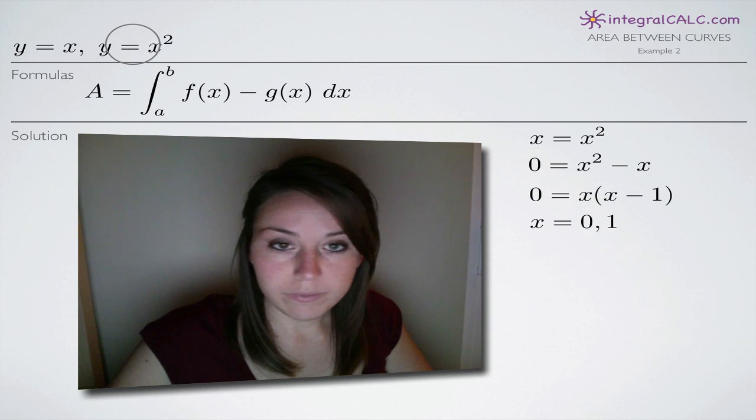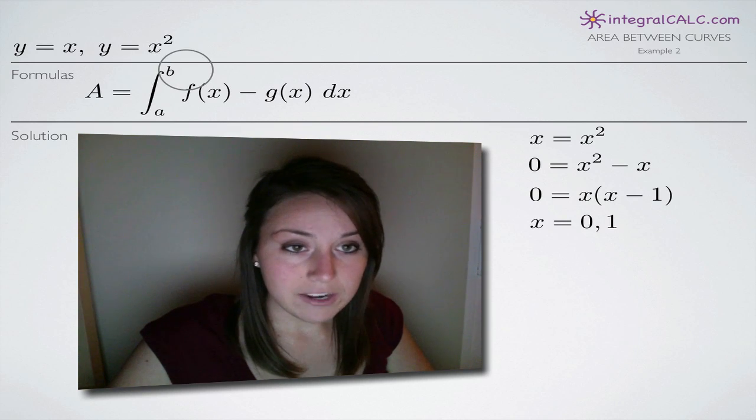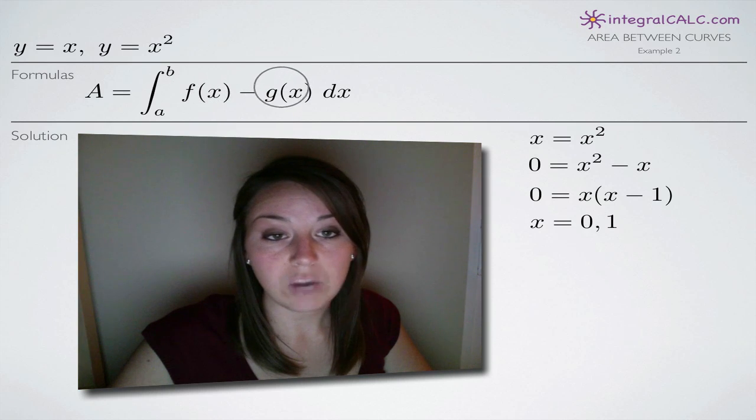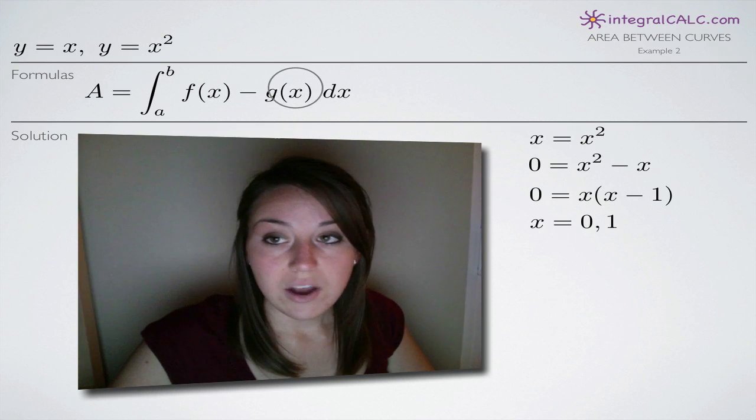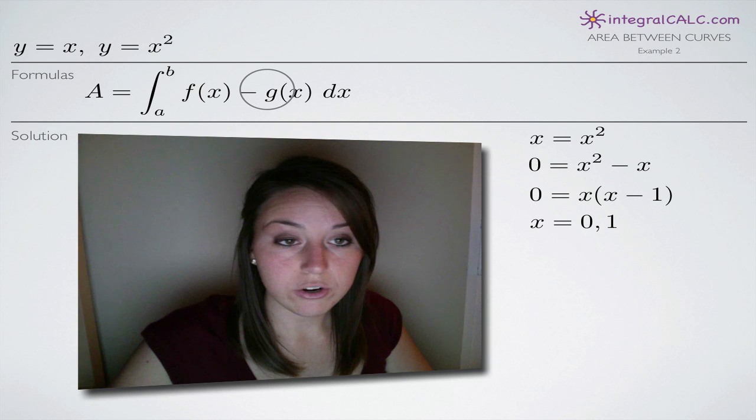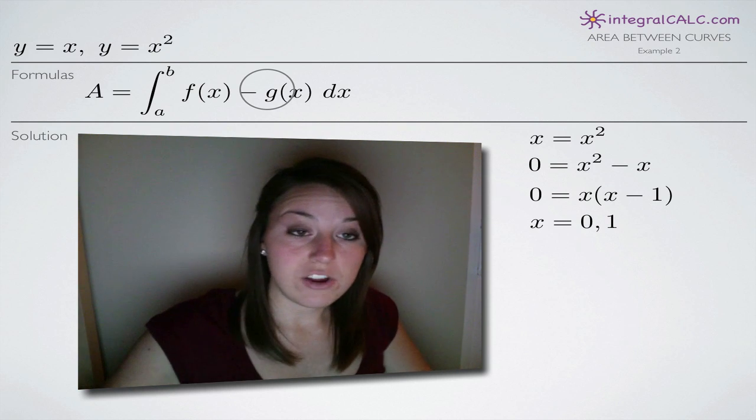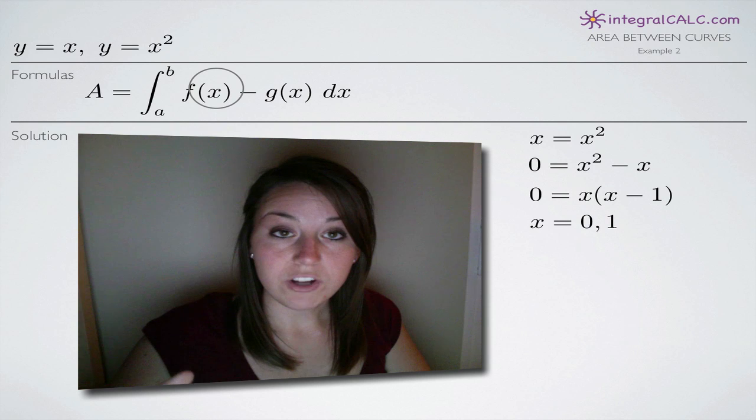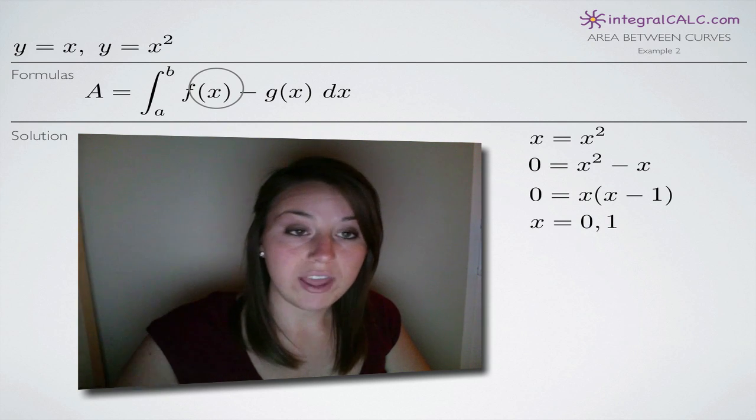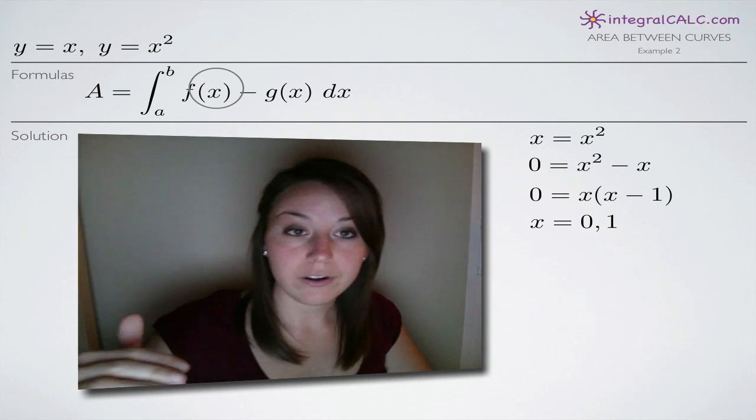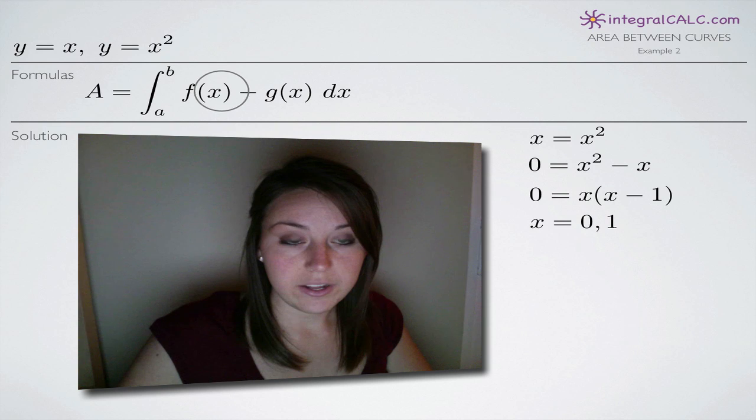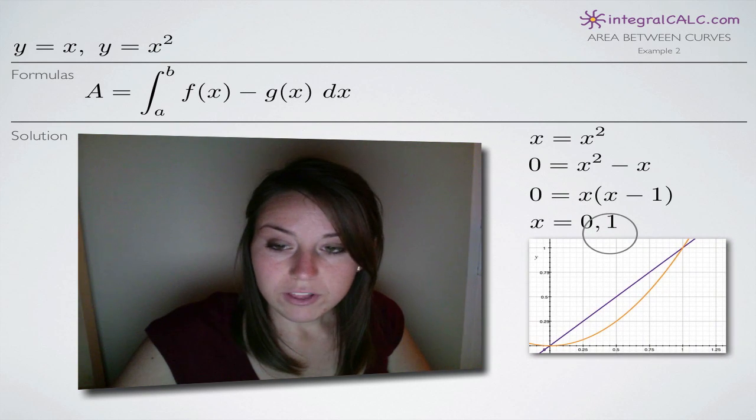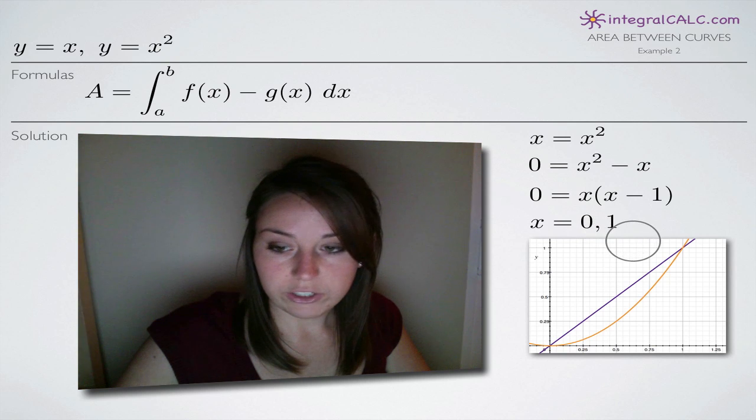So now that we've determined that, the next thing we need to determine is, like I said before, which of our functions will be f of x and which will be g of x. Now when we're finding the area between curves, it's really important to figure out which is which because f of x must be the function that is greater than or literally higher than the other function on the range at which we're evaluating. So in this case, zero to one. So if we look at a graph of these two functions,